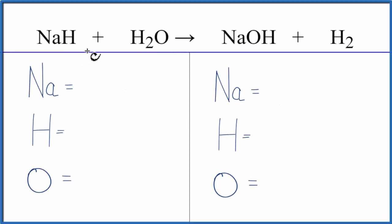To balance the equation NaH plus H2O yields NaOH plus H2, let's count the atoms up.